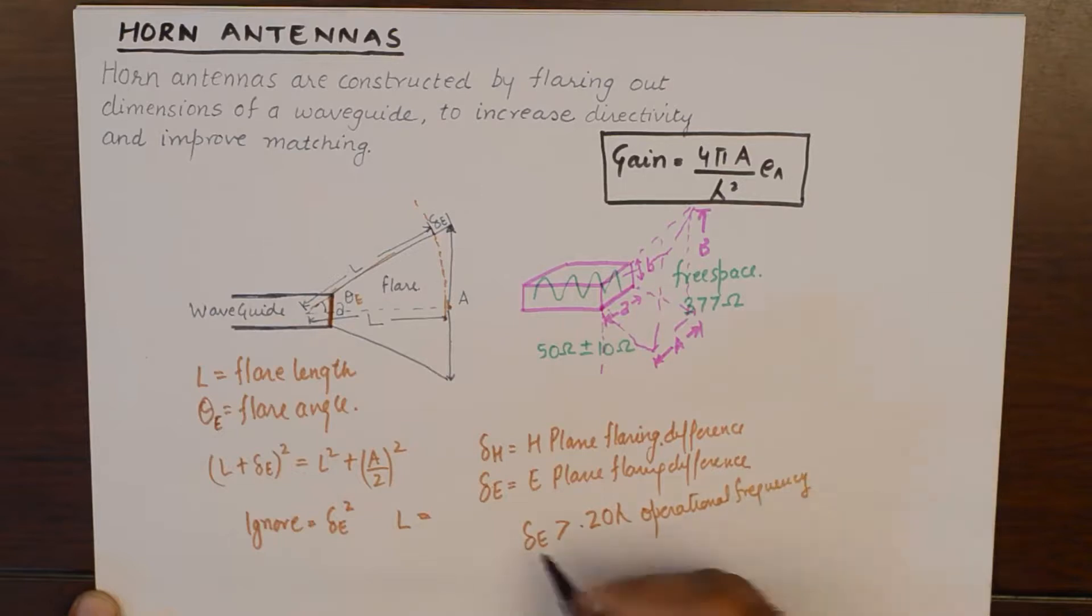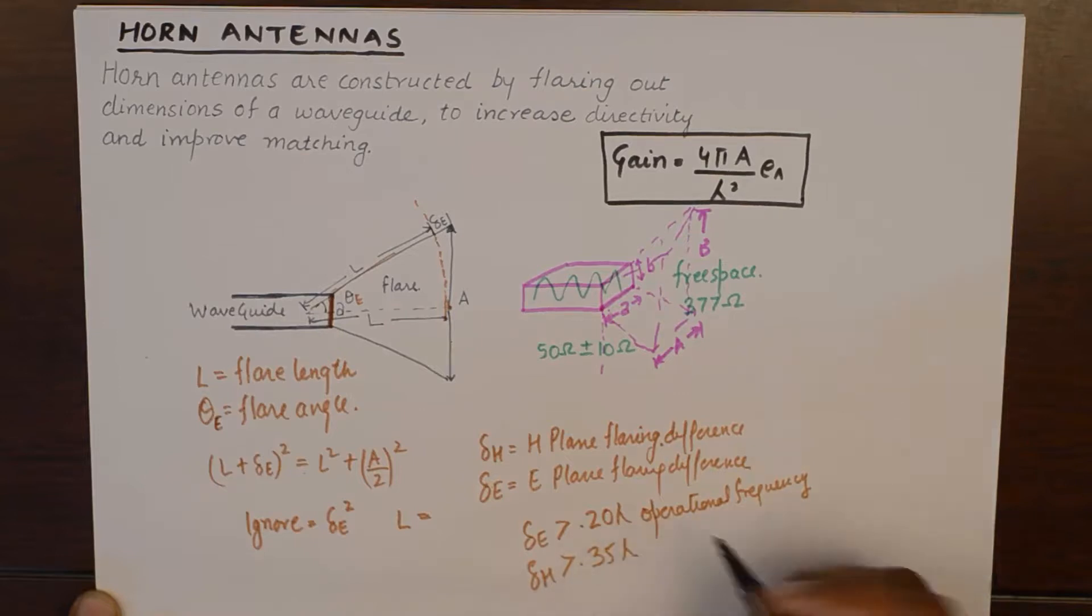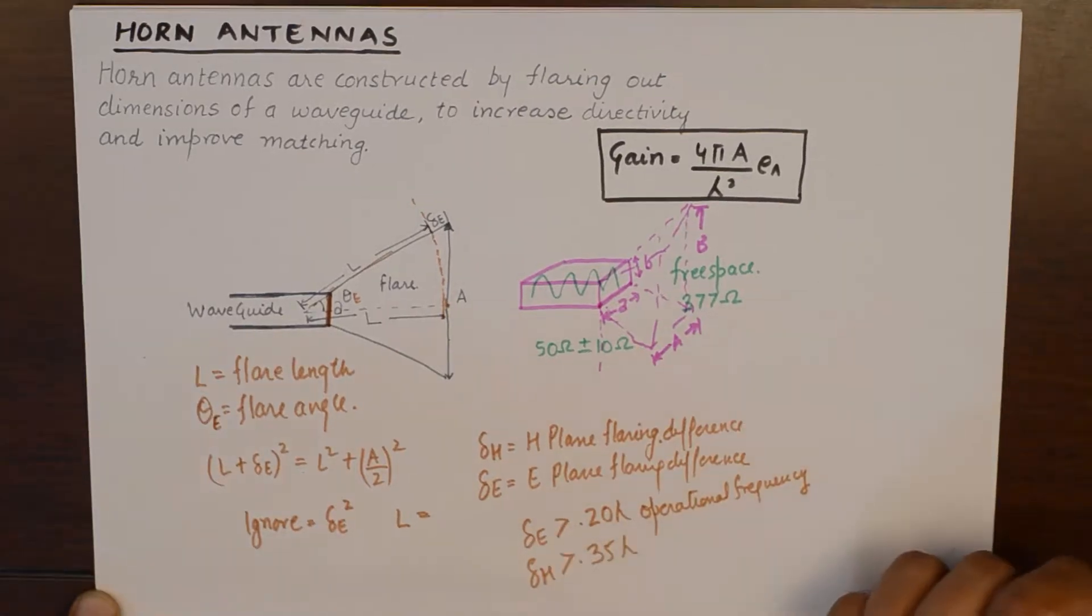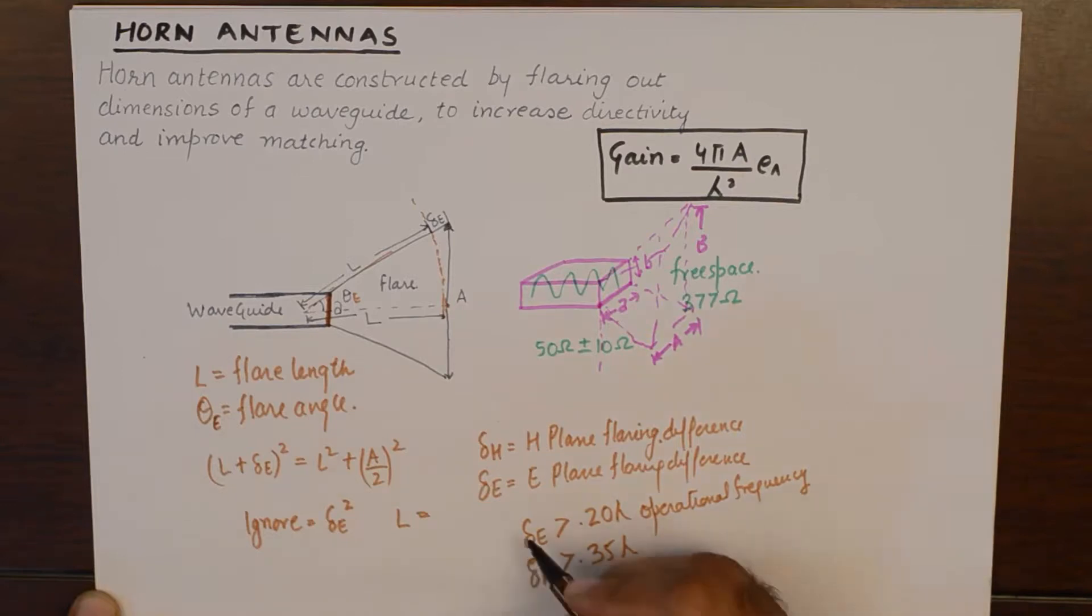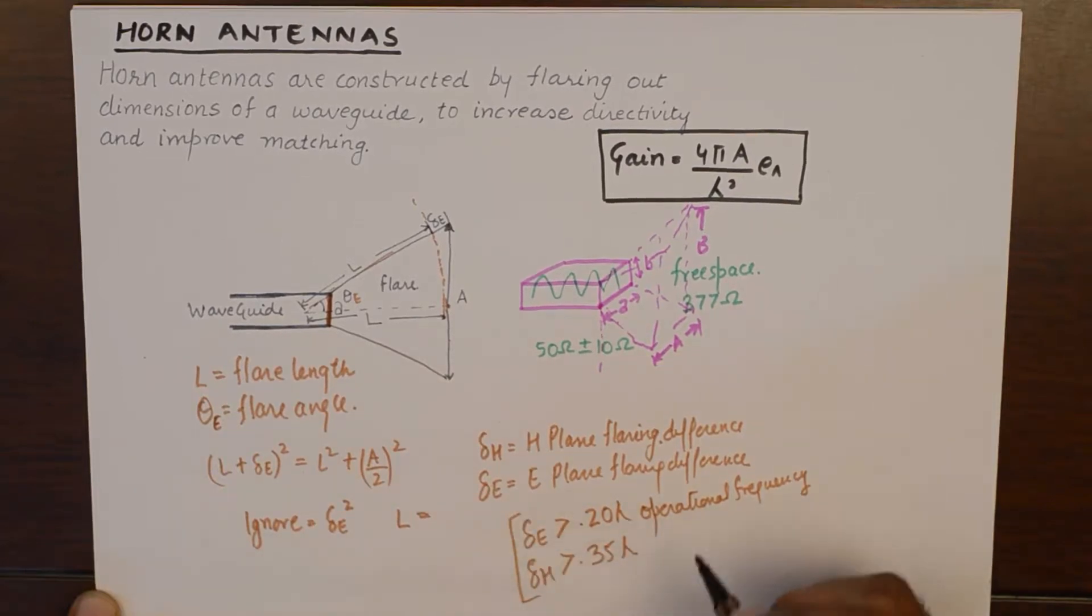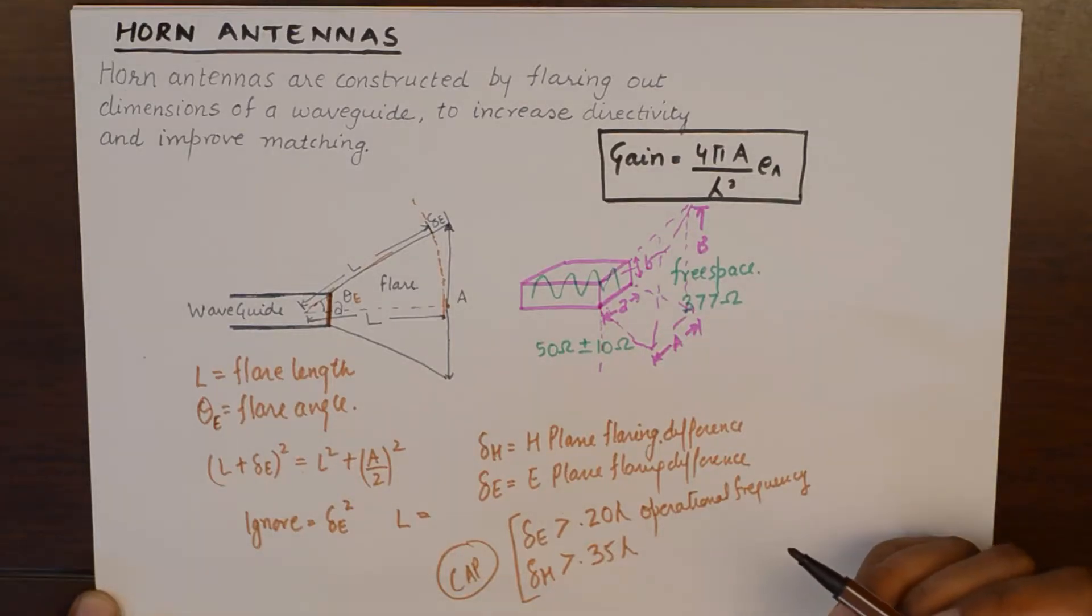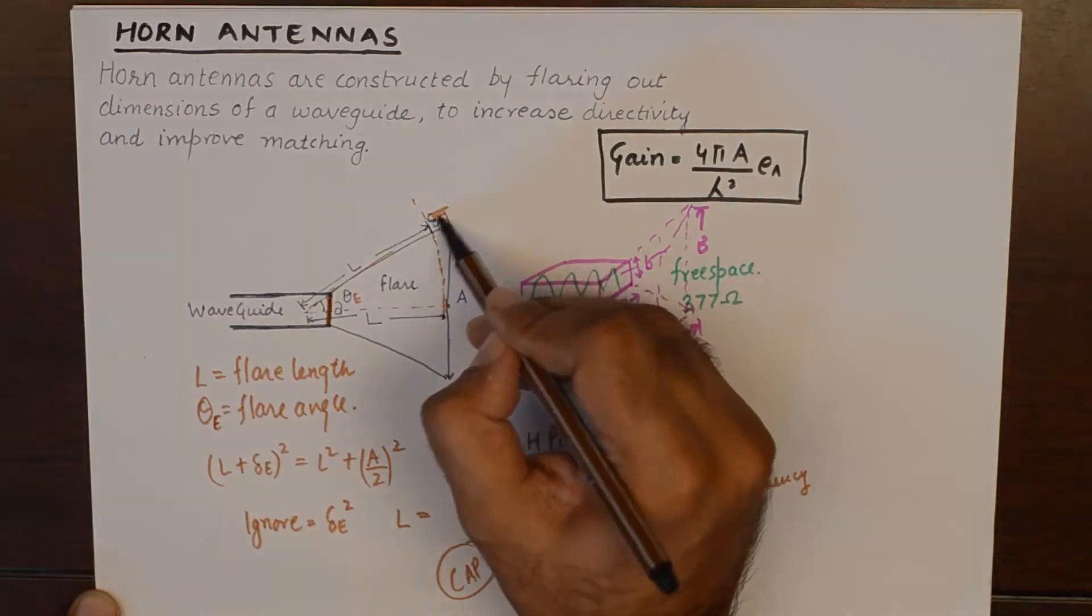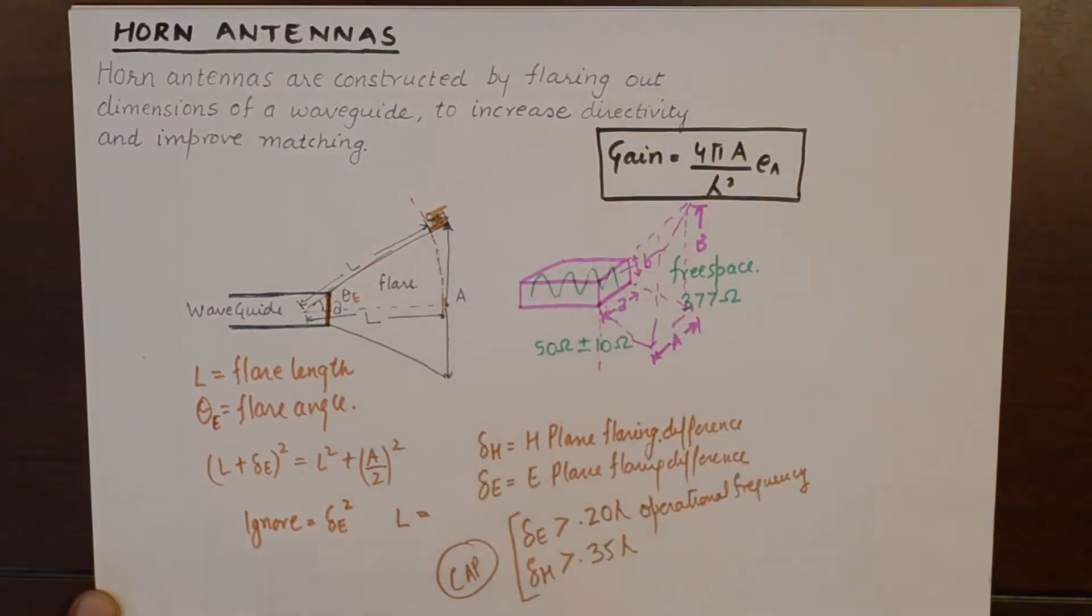And, I am not sure about the value of delta H. I guess it is 0.35 delta or these are interchangeably used. But, I would like to make a special mention here that they have a cap on their maximum value. So, you cannot go on and increase the flare length indefinitely because you have a cap on delta E this length and delta H if you flare the other side.